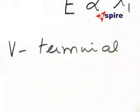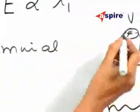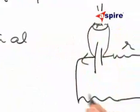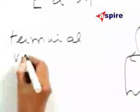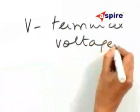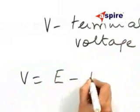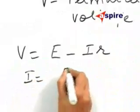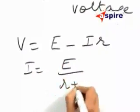The potential difference between the two electrodes when the cell is sending current through the external resistance is called the terminal voltage. Terminal voltage equals E minus IR, and I equals E by R plus r using Ohm's law.